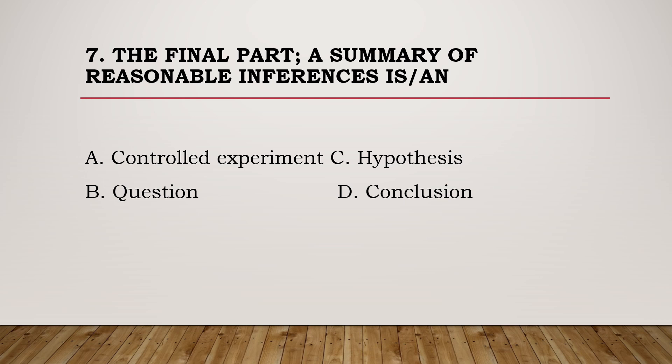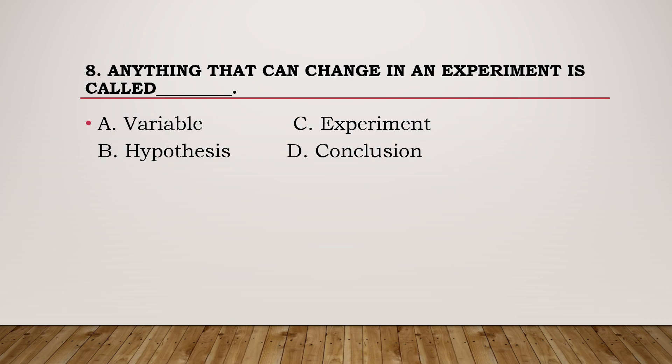Number 7: The final part where a summary of reasonable inferences is made is called blank. A. Controlled experiment. B. Question. C. Hypothesis. D. Conclusion. Number 8: Anything that can change in an experiment is called blank.